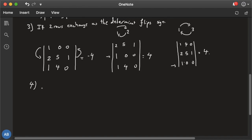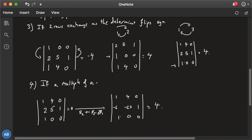One other important property: if you've got a matrix 1, 4, 0; 2, 5, 1; 1, 0, 0 with determinant 4, and if a multiple of a row is subtracted from another row, say instead of r2 you plug in r2 minus 8r1, you get 1, 4, 0; -6, -27, 1; 1, 0, 0. This gives you 4. So if a multiple of a row is subtracted from another row, the determinant remains unchanged.